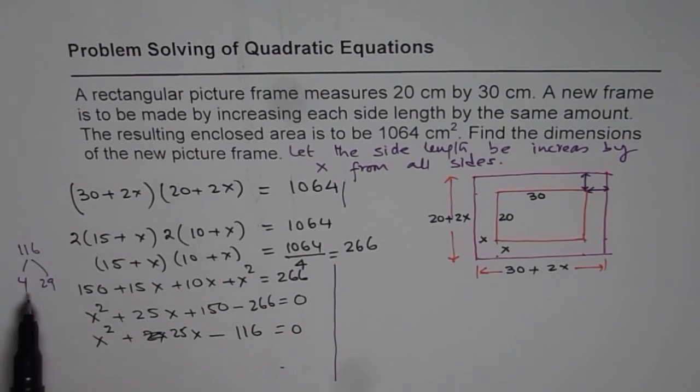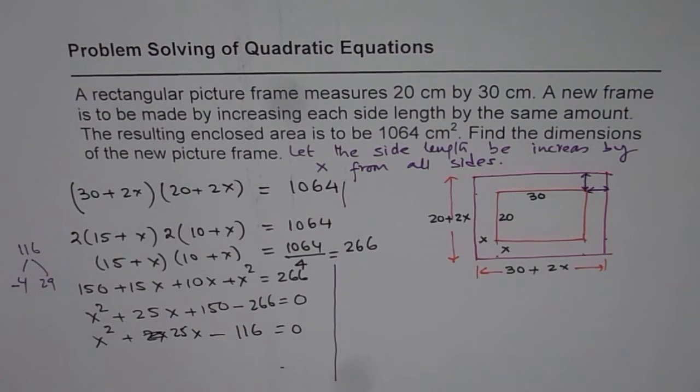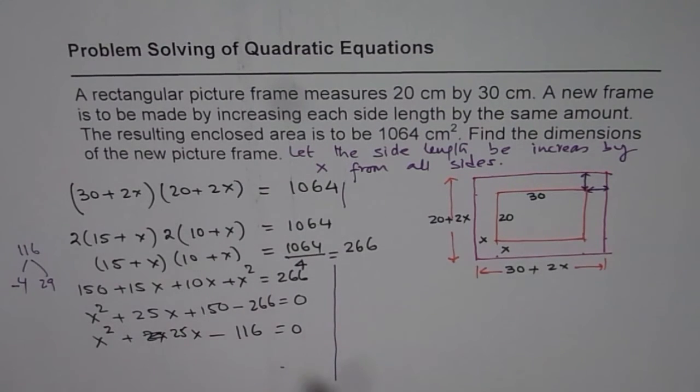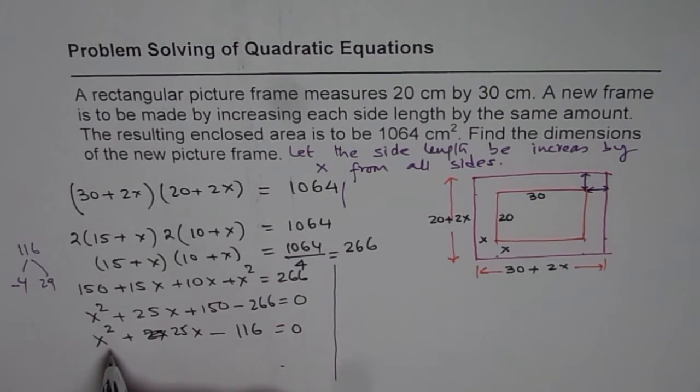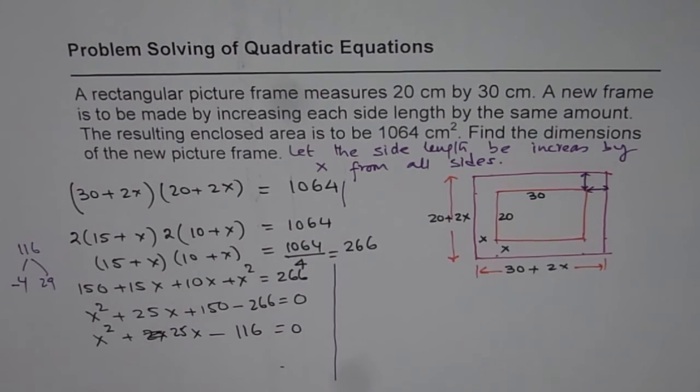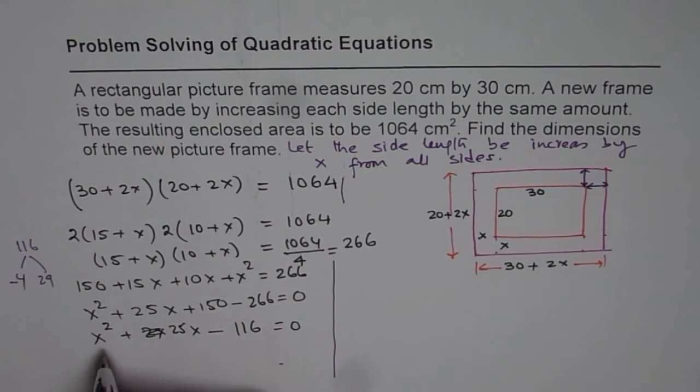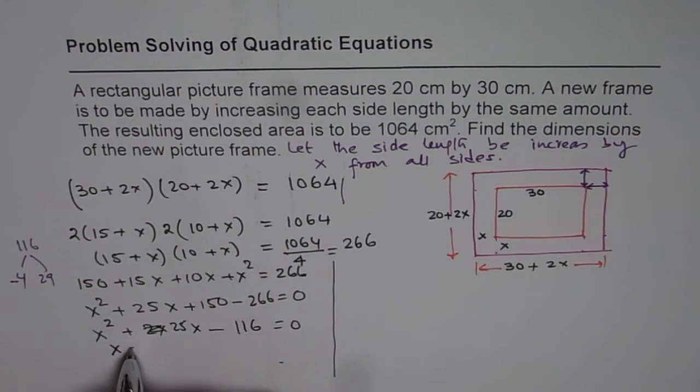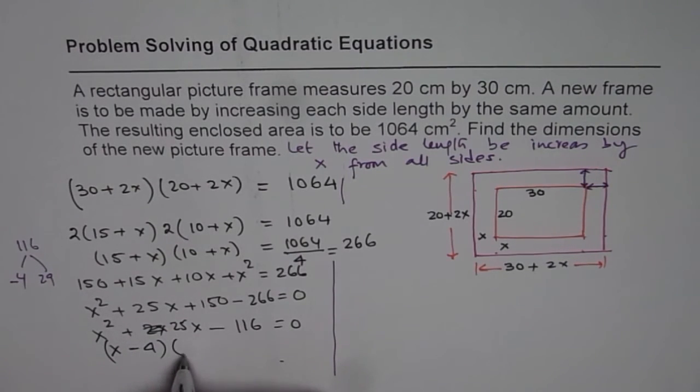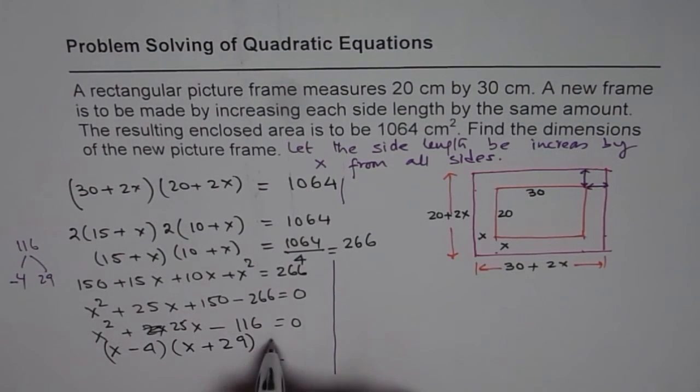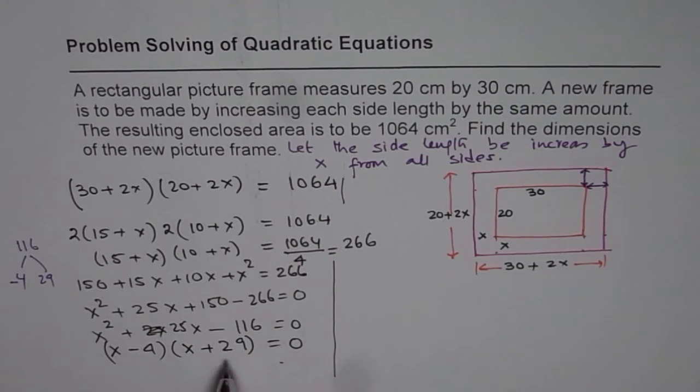While this works, if I can use 29 and 4, we will get 25. Since we need 25 as positive, we can take 4 negative and 29 positive. So we can actually factor. I can write this as (x - 4) times (x + 29) equals 0.